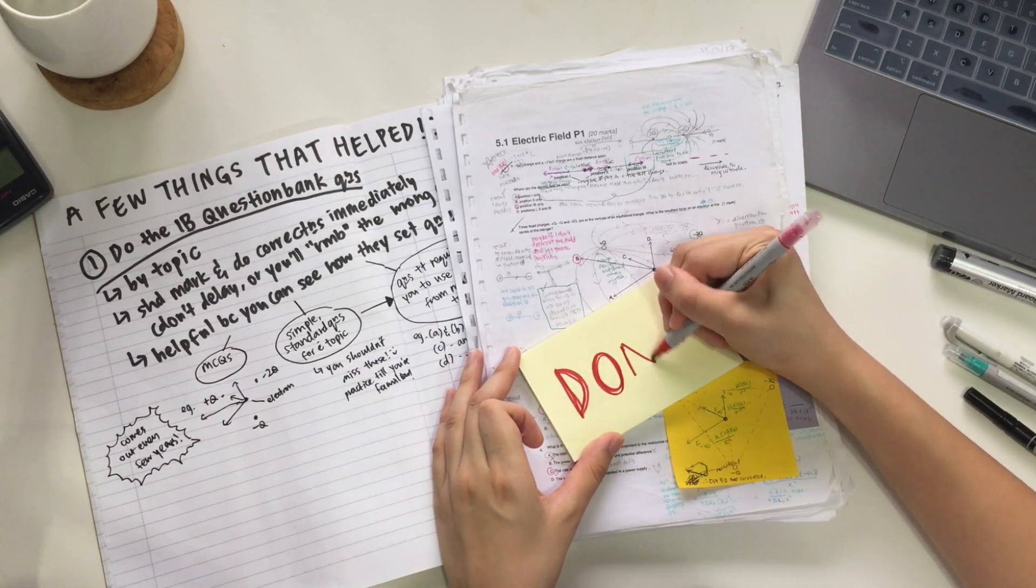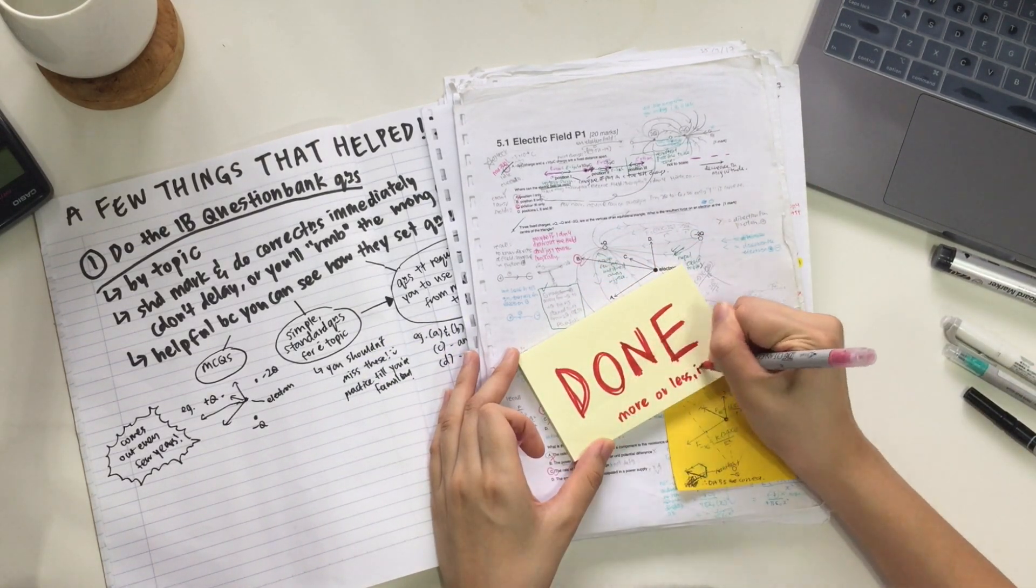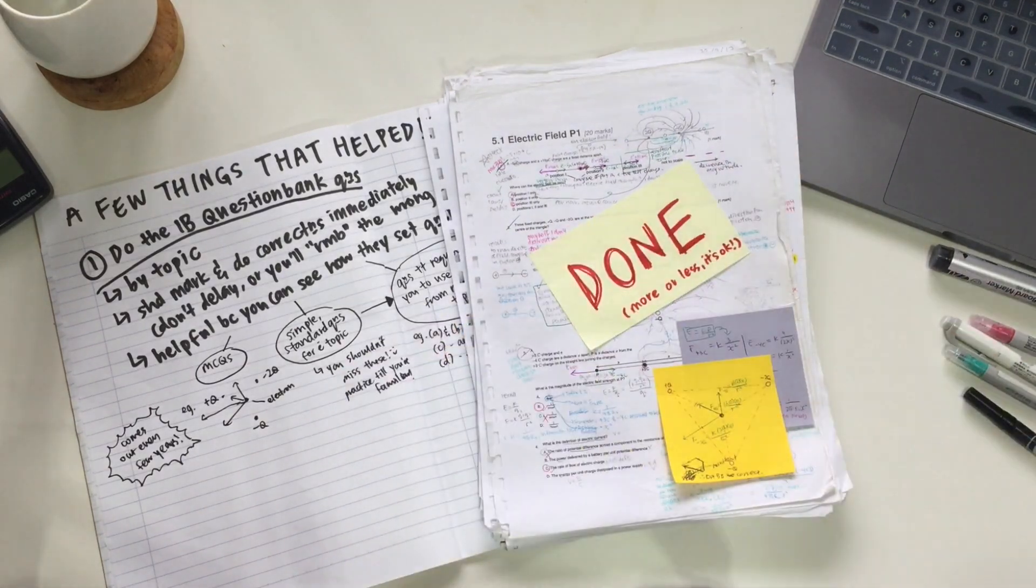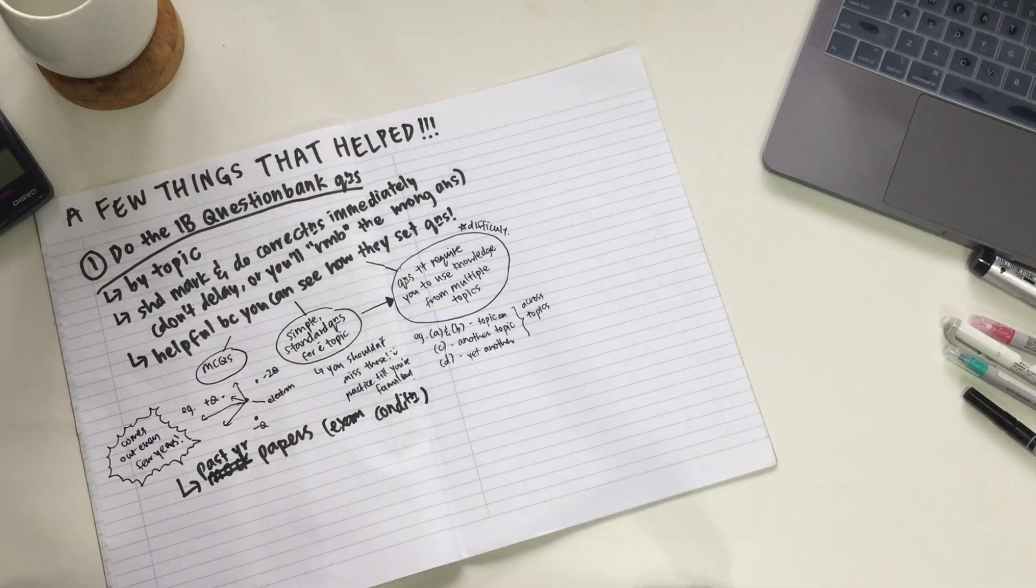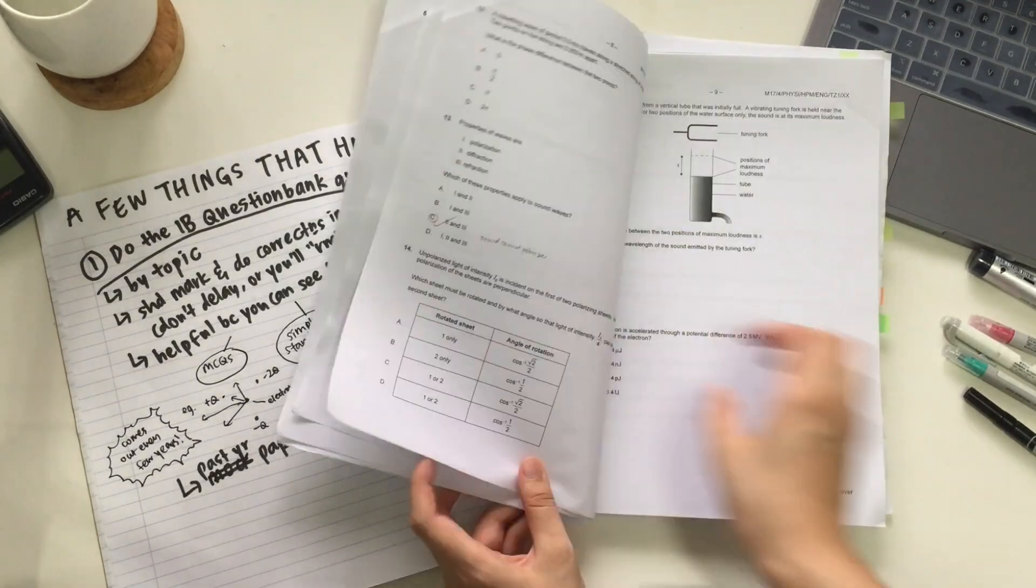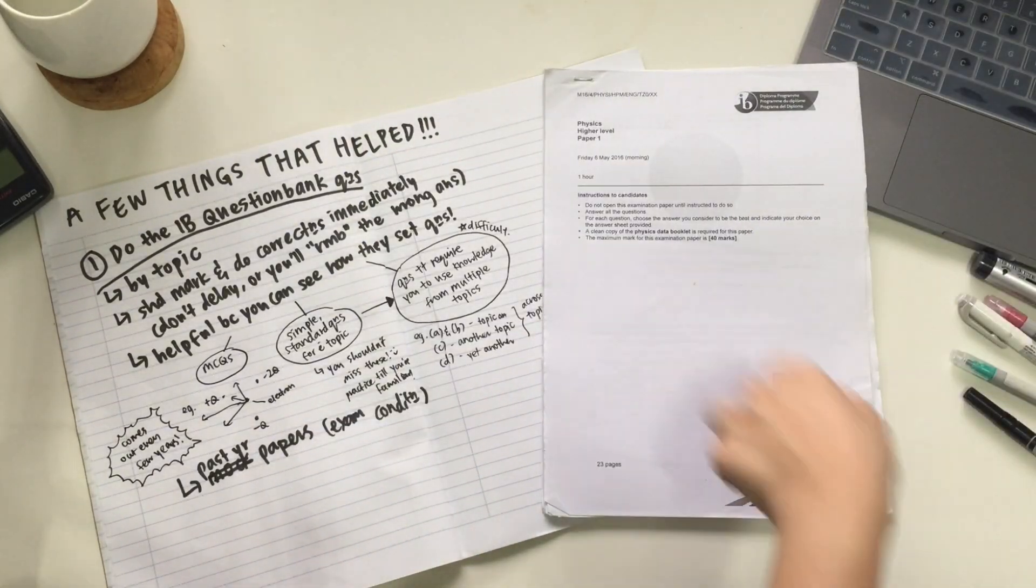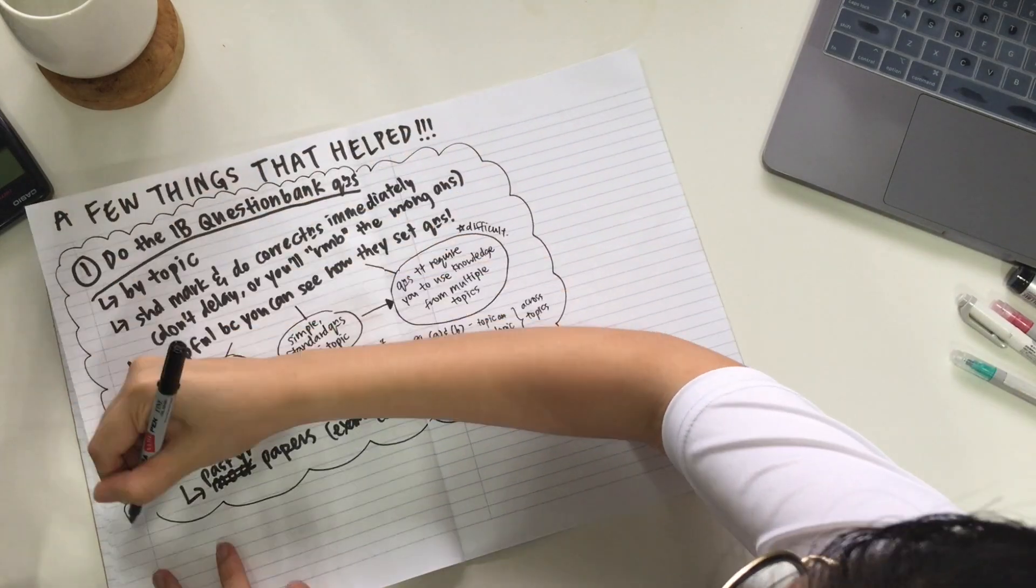Once you're more or less done with the question bank questions by topic, you might want to move on to doing the past year papers, the full length past year papers under exam conditions. The main goal of this is for you to get used to finishing under the time limit and gain confidence as you see your score improve slowly over time.